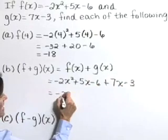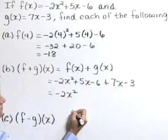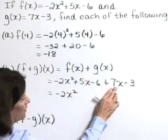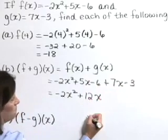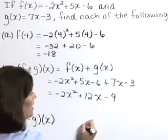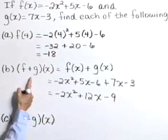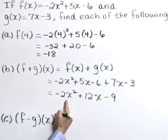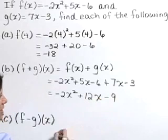Combine like terms. Out in front, we have negative 2x squared. 5x plus 7x is 12x. Negative 6 and negative 3 is negative 9. So f plus g of x is equal to negative 2x squared plus 12x minus 9.